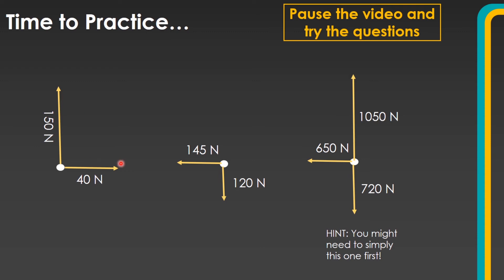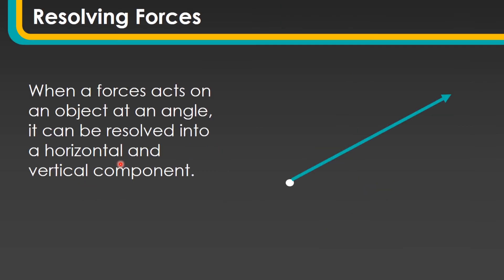Let's have a look at an example. For instance, we might have a force acting at an angle. What we would need to be able to do is turn this into a horizontal component and a vertical component — you might be able to work out how we might do that using a similar method to the one we've just looked at.